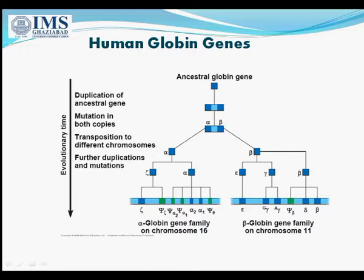On different chromosomes, further mutations accumulated and further duplications also occurred. On the alpha side, zeta and alpha genes gave rise to zeta, epsilon-zeta, epsilon-alpha2, epsilon-alpha1, alpha2, alpha1, and alpha-theta genes — all comprising the alpha globin gene family on chromosome 16. On the beta side, the beta gene further mutated to epsilon and gamma; the gamma gene further mutated to G-gamma and A-gamma; and the beta gene itself mutated to psi-beta, delta, and beta — all comprising the beta globin gene family on chromosome 11.